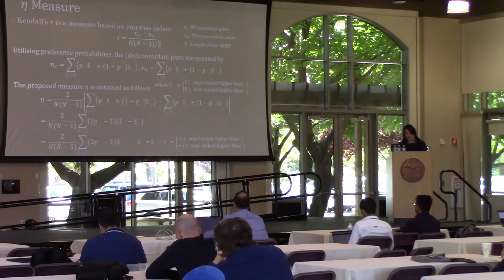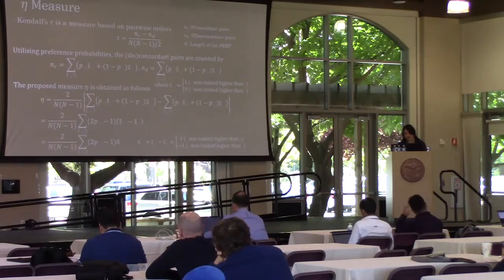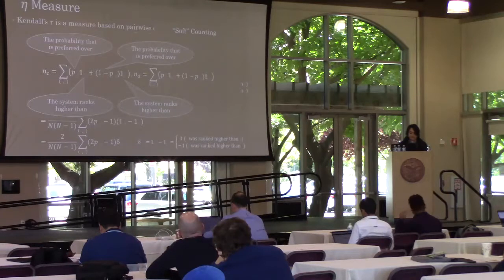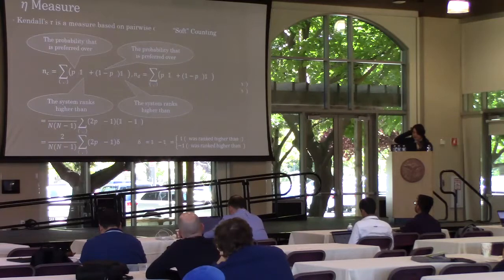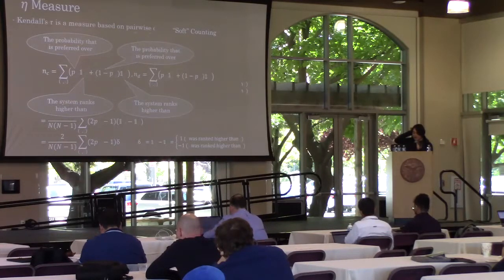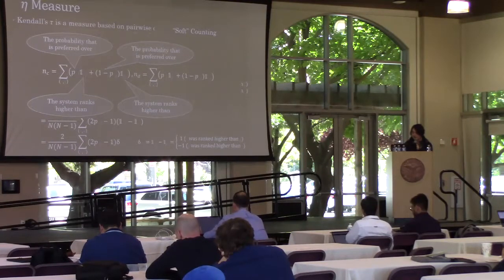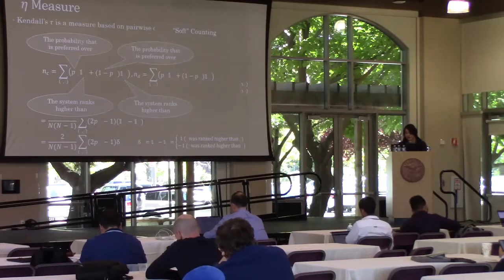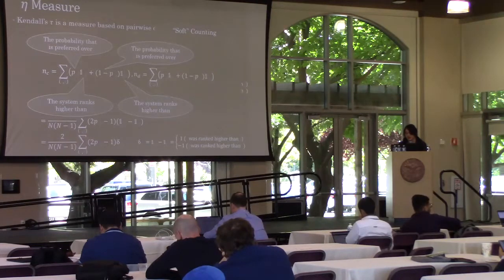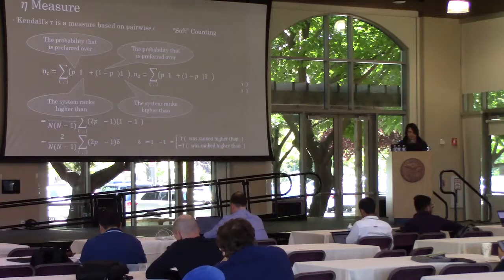By utilizing the preference probabilities, the concordant pairs and discordant pairs can be counted like this. The concordant pairs can be obtained as the sum of the concordant probabilities. If the system ranks i higher than j, then sum up pij, the probability that i is preferred over j. If the system ranks j higher than i, then sum up pji, the probability that j is preferred over i.